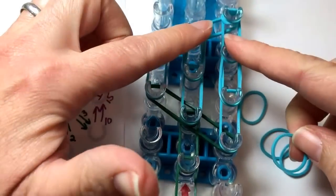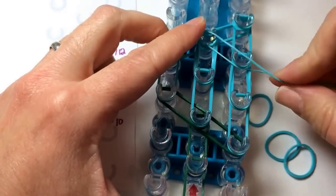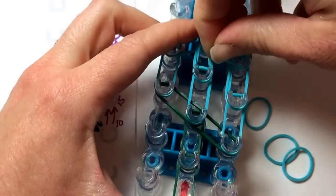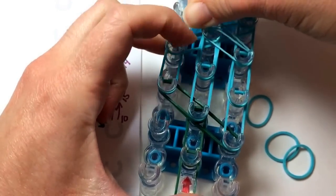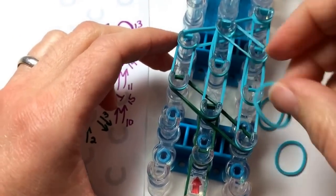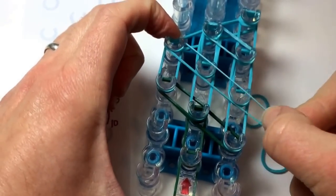Then around these two pegs, a single rubber band wrapped twice. And then around these three pegs, just one single rubber band.